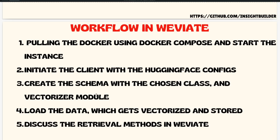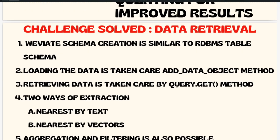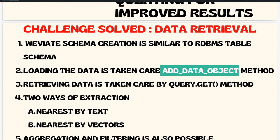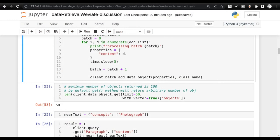So let me move to the next step. The point is: pull Weaviate using Docker Compose, start the instance, initiate the client with Hugging Face configs, and create the schema. We've done all these things. Now we need to query and get the object — this is the step we're starting now.